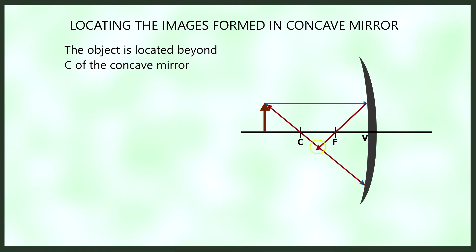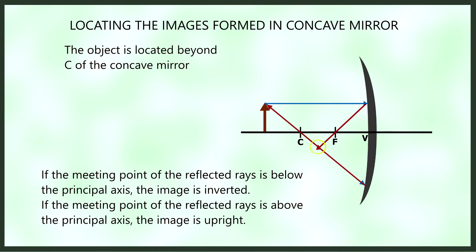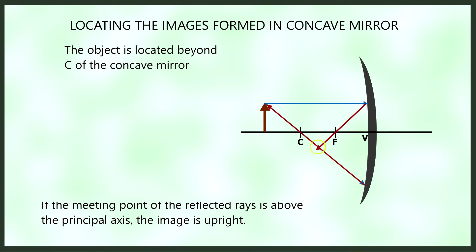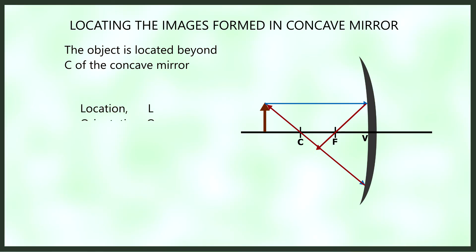Please take note: if the meeting point of the two reflected rays is below the principal axis, the image is inverted. If the meeting point is above the principal axis, the image is upright. We describe the image in terms of the following: location (L), orientation (O), size (S), and type (T).